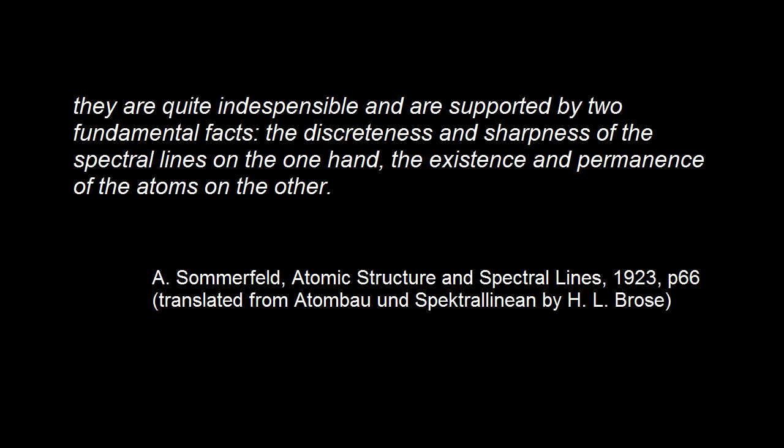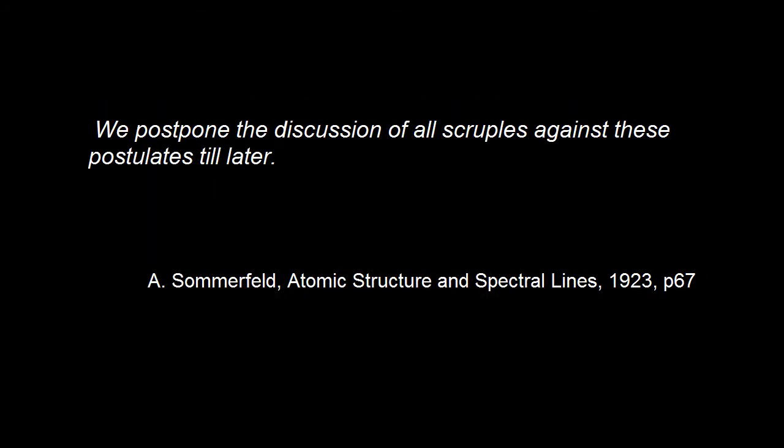Concerning his assumptions, however — in particular his assumption that electrons orbited like planets — he noted that paradoxically they were essential to explain the spectra while being inconsistent with classical physics. He decided, however, to continue to progress with his ideas with a view to worry about the postulates later. As a result, a quantum theory of the atom, now known as the Bohr-Sommerfeld atomic model, became established.